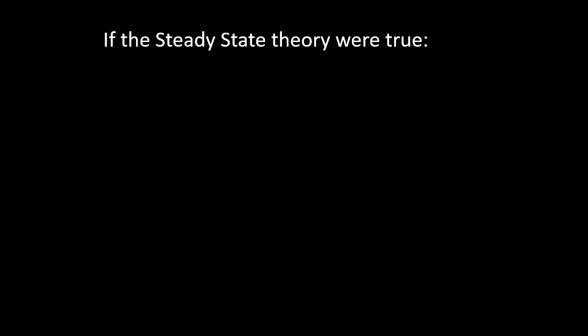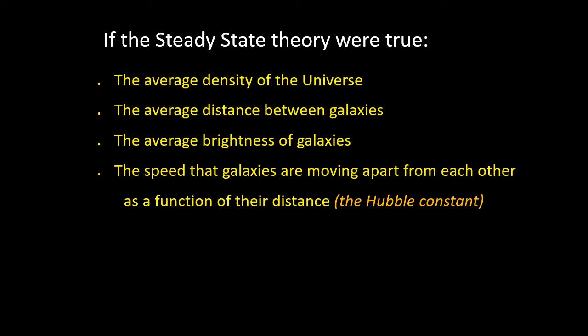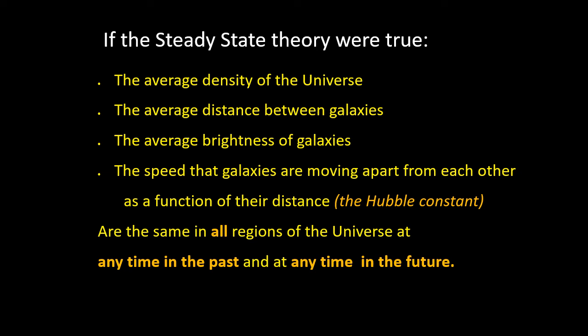Indeed, if the Steady State Theory were true, then an observer would measure the same values of the average density of the universe, the average distance between galaxies, the average brightness of galaxies, and how the speed the galaxies are moving away from each other varies as the distance, this is the relationship known as the Hubble constant, in all regions of the universe, at any time in the past, no matter how far back we go, or any time in the future.